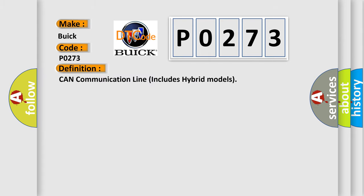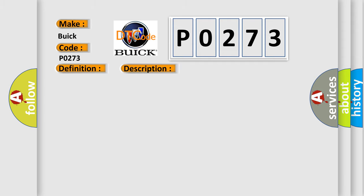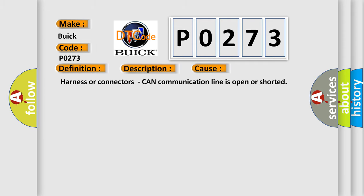The basic definition is: CAN communication line, including hybrid models. Hybrid caution: hybrid systems use very high voltage battery systems. Before starting any service work involving the battery system and ECM, turn the ignition switch off and then remove the service plug from the pocket in the trunk. After removing the service plug, wait 10 minutes before touching any of the high voltage connectors and terminals. When the ECM is not transmitting or receiving a CAN communication signal other than OBD emission-related diagnosis for two seconds or more, this diagnostic error occurs. It occurs most often in these cases: harness or connectors — CAN communication line is open or shorted.